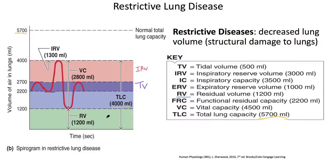The next one is going to be this number right here — the inspiratory reserve volume. Now they made a bit of a typo when they made this. They had this arrow coming all the way up and down. That is the inspiratory capacity, not the reserve volume. So if you have these slides, I want you to note the difference. This red region is the IRV. The summation of the red and the purple is the IC, and that's the inspiratory capacity.